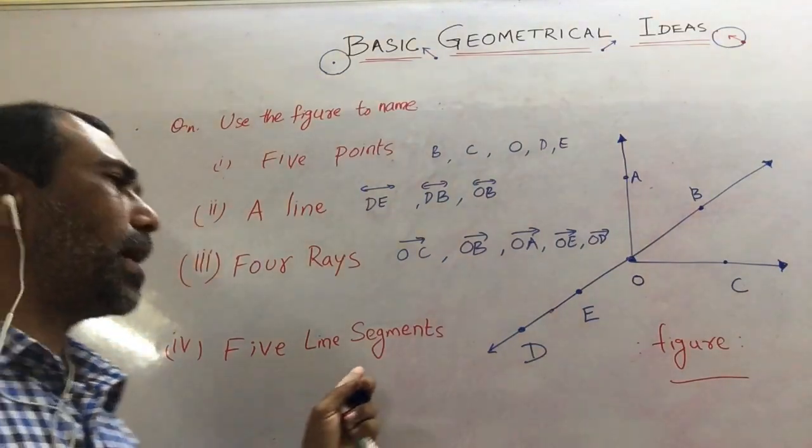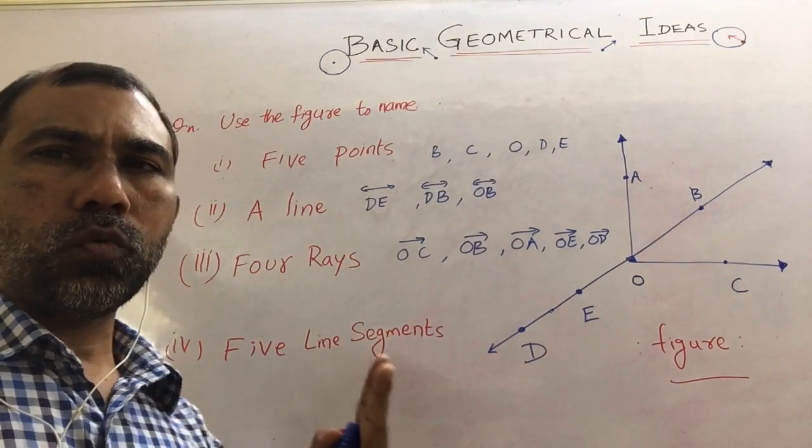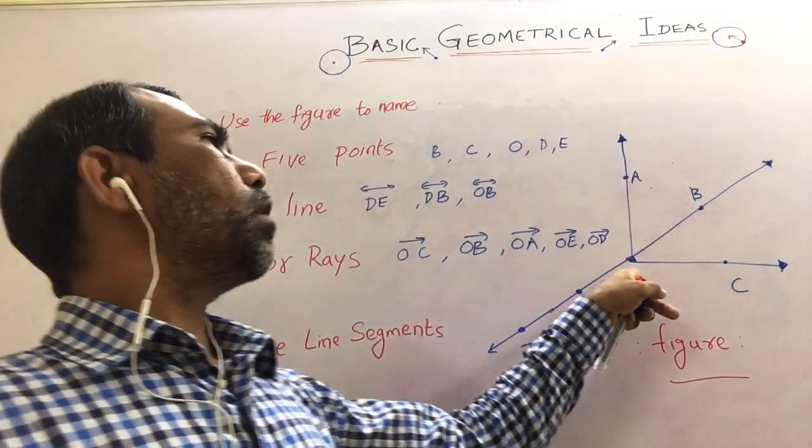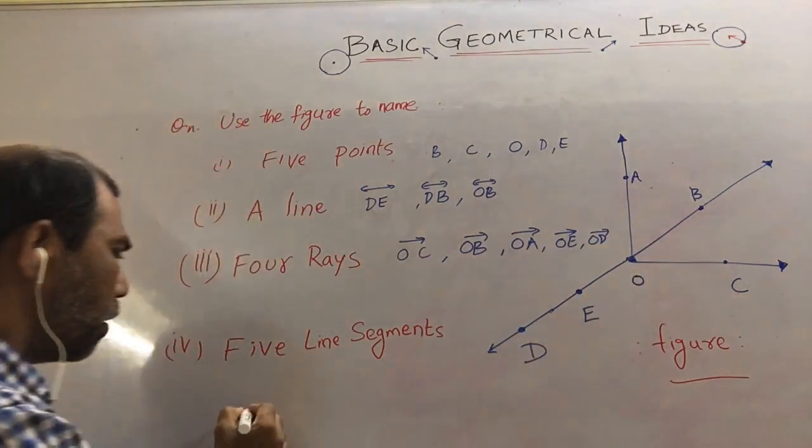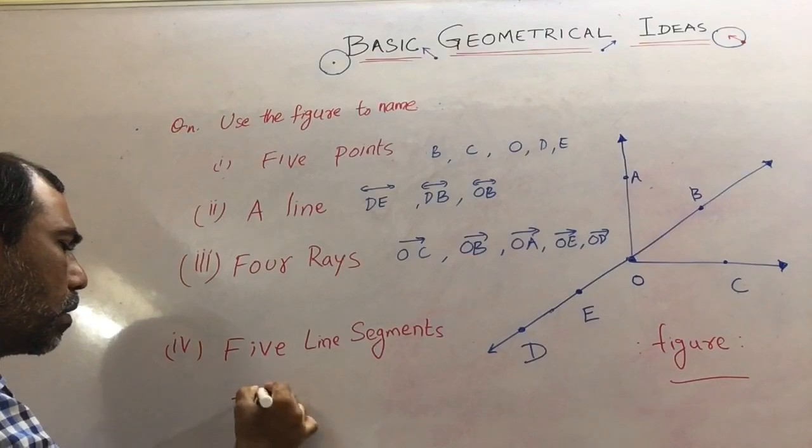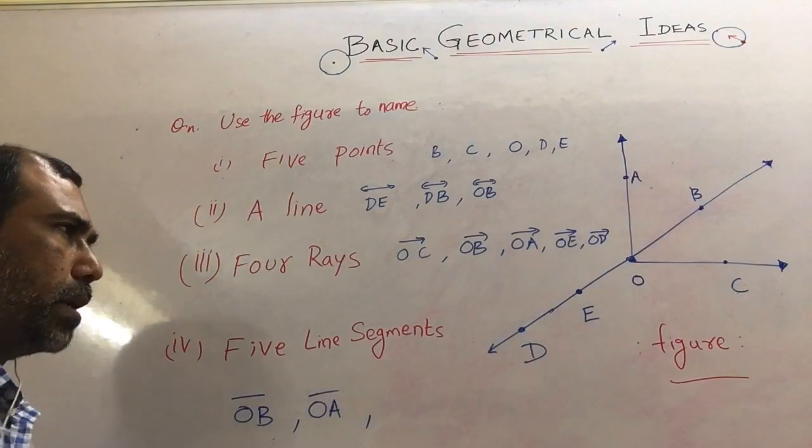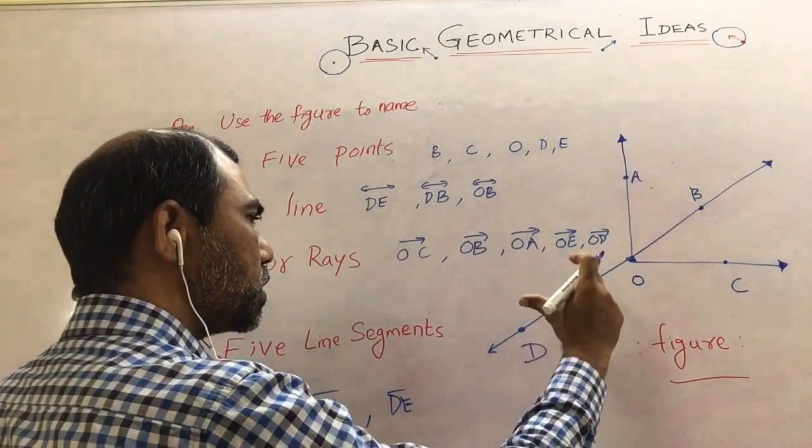Finally the five line segments. You can write the five line segments with two points. The point can be OB. Two points if you are taking OB, OB you can take a line segment. Of course, OA also you can take a line segment. DE also you can take. This is the fixed length.